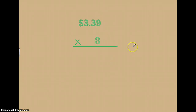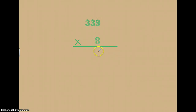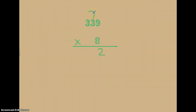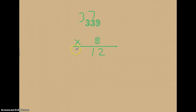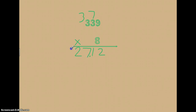I know that was a lot to take in with all the regrouping. So let's go through the problem again quickly and pretend that the dollar sign and the decimal aren't actually there, treating this like a normal multiplication problem. Eight times nine is seventy-two — put the two in the ones place, carry the seven. Eight times three tens is twenty-four tens, plus seven is thirty-one tens — put the one and carry the three. Eight times three is twenty-four, plus three is twenty-seven. Then, remember we're dealing with money: starting on the right side, go over two places for our decimal point and add our dollar sign.